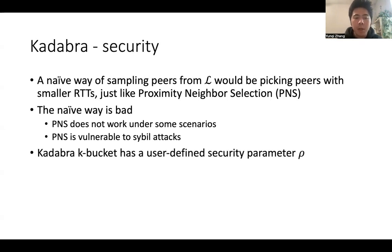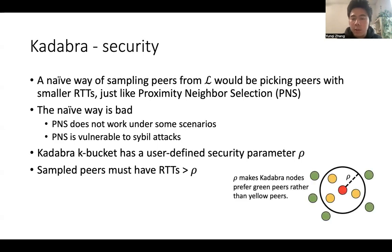In Cadabra, each K-bucket has a user-defined security parameter, rho. We sample peers, and the peers must have RTTs greater than rho. Let's use a figure to illustrate. Rho makes Cadabra nodes prefer green peers rather than yellow peers. This helps a Cadabra node avoid sybil nodes.